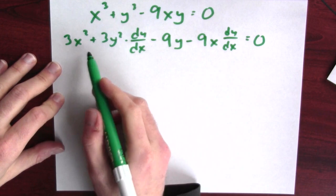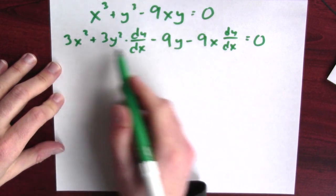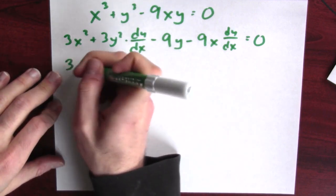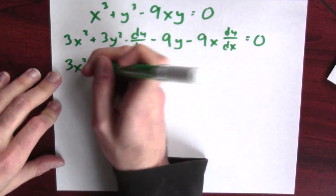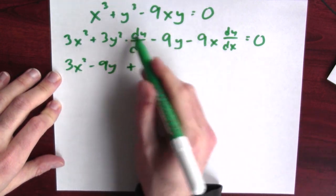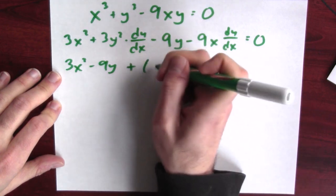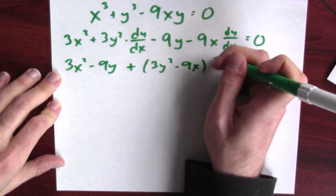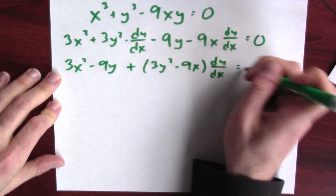All right, now I can rearrange this. The things with the dy dx and the things without the dy dx can be gathered together. So 3x squared minus 9y plus, and the things with the dy dx term, 3y squared minus 9x dy dx equals 0.